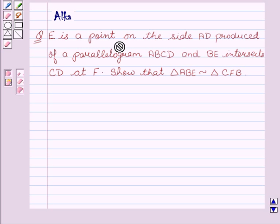E is a point on the side AB produced of a parallelogram ABCD and BE intersects CD at F. Show that triangle ABE is similar to triangle CFB.